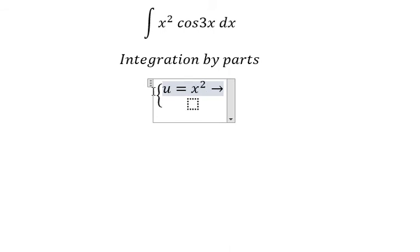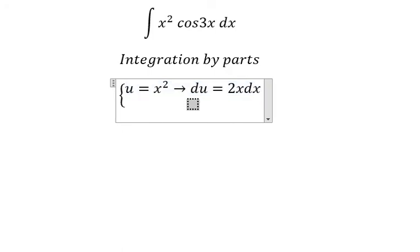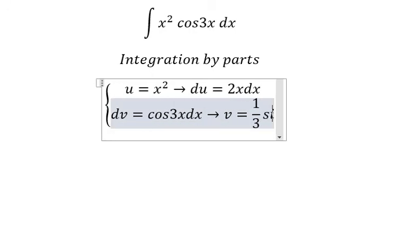When we differentiate both sides, we have du equals to 2x dx. For dv, we have cos 3x dx. The integration of cos 3x, we have v equals to 1 over 3 sin 3x.